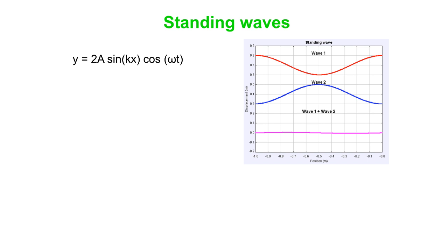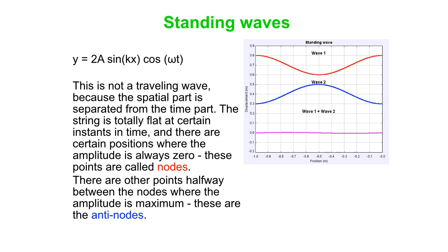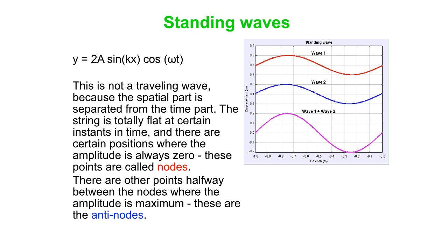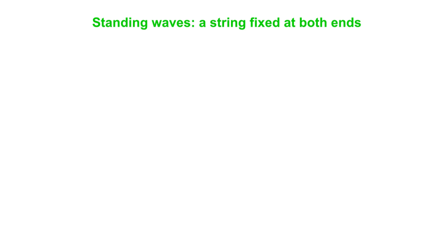Let's back that up and see that thing move again. You can see that on this string there are three nodes and two antinodes if you see that thing oscillating.